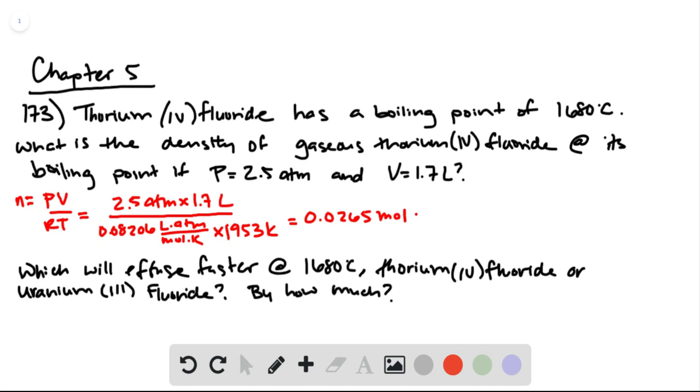The molar mass of thorium-4-fluoride is 308.03 grams per mole, which tells us we have 8.17 grams. Because we have 1.7 liters, we can divide 8.17 grams by 1.7 liters to figure out the density. That's 4.8 grams per liter.